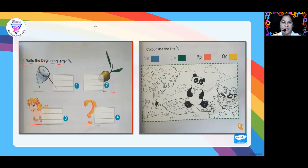I will give you one example for the letter N. What is the beginning letter of the word net? That is letter N — very good. I want you to also write the lowercase here. Do you understand? Yes, I do. Thank you. So I want you to do it here, please.